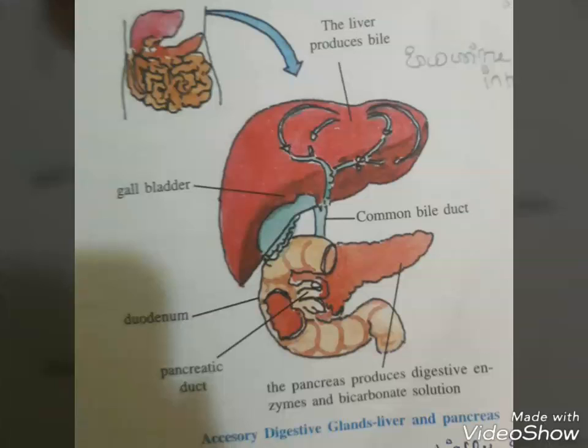A cartilaginous flap called the epiglottis prevents the entry of food into the glottis, the opening of the windpipe, during swallowing. The esophagus is a long tube which extends posteriorly passing through the neck, thorax, and diaphragm, and leads to a J-shaped bag-like structure called the stomach. A muscular sphincter, the gastroesophageal sphincter, regulates the opening of the esophagus into the stomach.